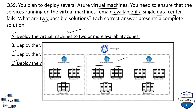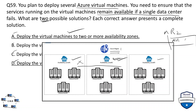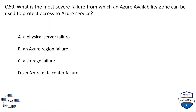If you deploy resources to two or more availability zones, then if there is an issue in one availability zone your application will still be available from the second. Similarly, across multiple regions — if resources in one availability zone fail, and you've deployed across a secondary region which also has availability zones, users will still be able to access resources from that second Azure region.